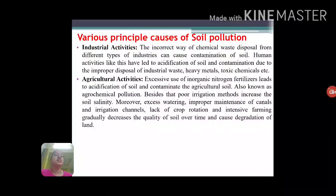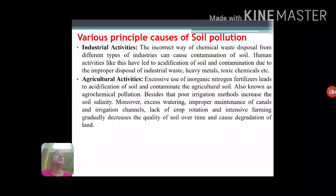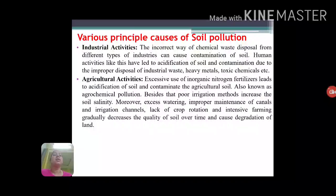Next is agricultural activities. In agriculture, different chemicals are used like chemical fertilizers and pesticides, and when these are used in excess, they may deteriorate the quality of the soil — this is also termed agrochemical pollution. Besides that, improper agricultural practices like poor aggregation methods, improper maintenance of canals, excessive watering of plants, lack of crop rotation, and intensive farming all gradually deplete soil health and make it unfit for growing crops.